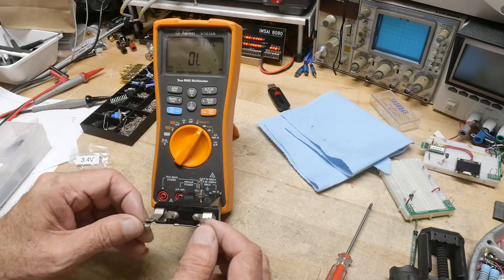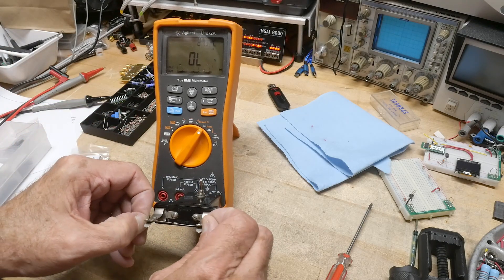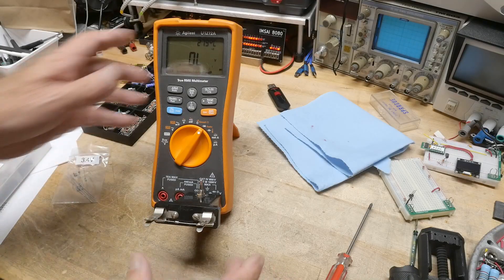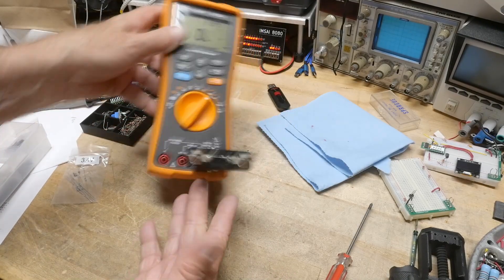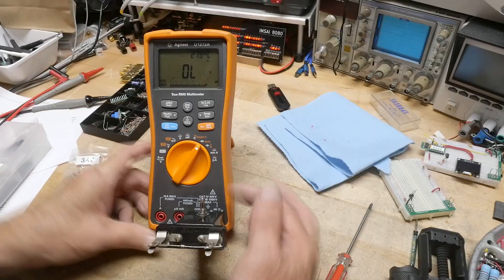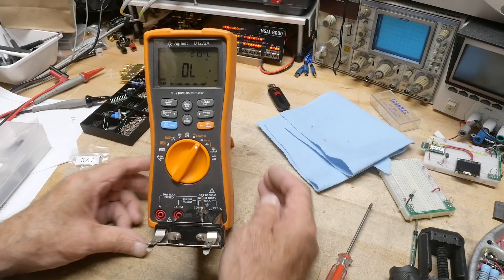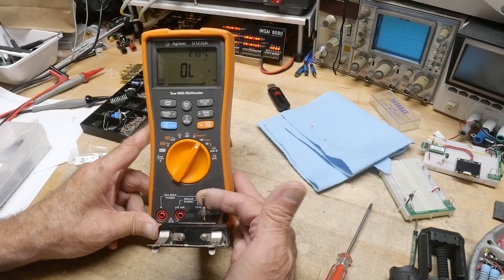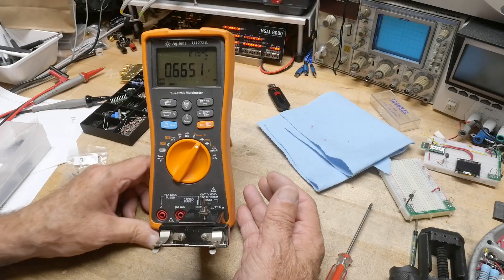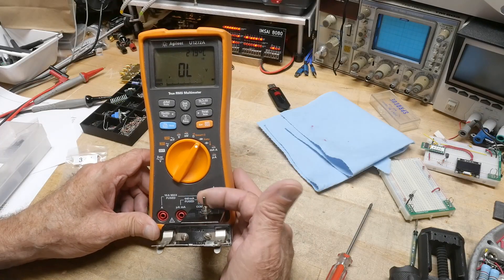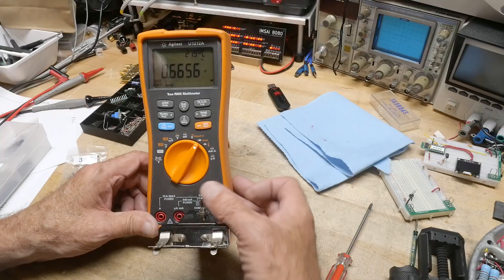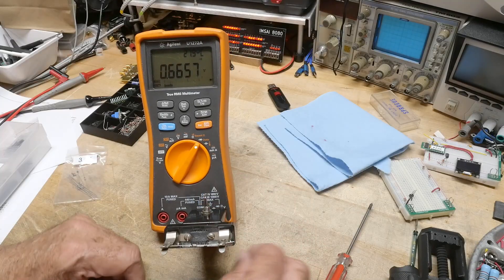All right, here's a diode we will put in the test socket like so. Can you see that it's in the test socket? Okay, and then we will flip it in one direction and it doesn't do anything. We'll flip in the other direction, it says 0.665. Look at that, woohoo! How exciting is that.